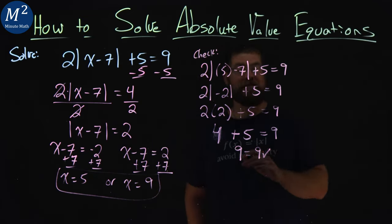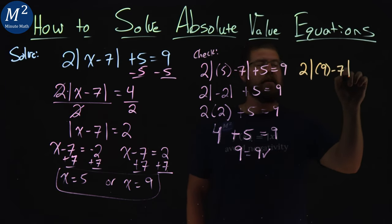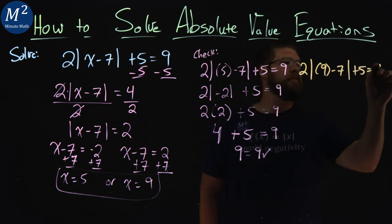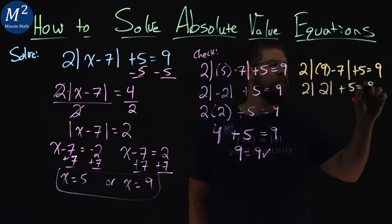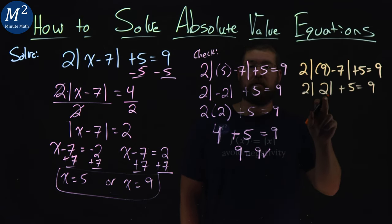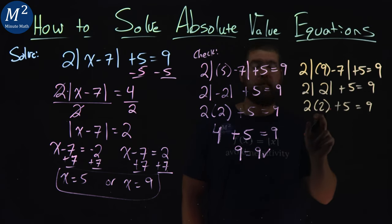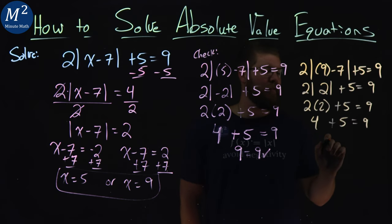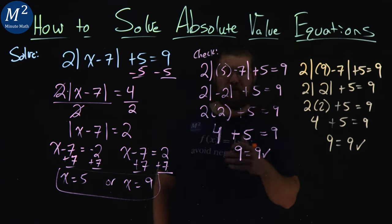Now I'm going to change markers. So again, same thing, 2 times the absolute value of 9 minus 7 plus 5 is equal to 9. Simplifying this, 2 absolute value, 9 minus 7 is positive 2, plus 5 is equal to 9. Absolute value of 2, again positive 2, so 2 times 2 here, plus 5 equals 9. 2 times 2 is 4, plus 5 equals 9, and 9 equals 9. So we're good.